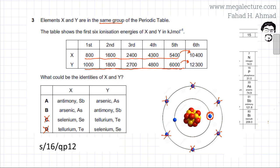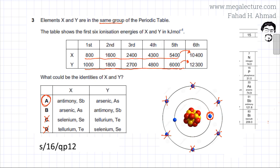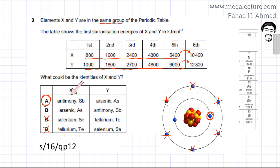Element X would be antimony, making option A the correct answer. X has lower ionization energies, meaning it is easier to remove electrons from X compared to Y. X must be the bigger atom — further down the group, its electrons are much further from the nucleus, so removal is easier than from arsenic. Option A is the correct answer.